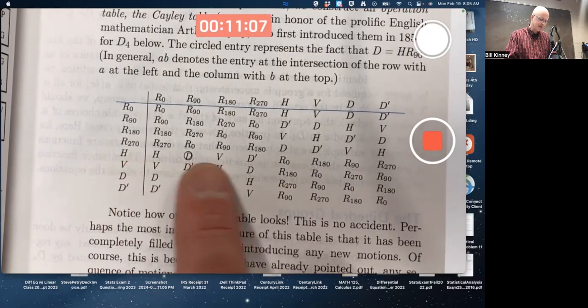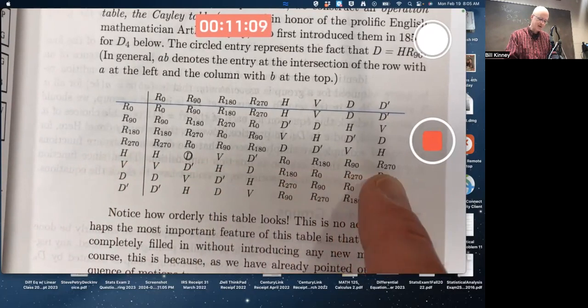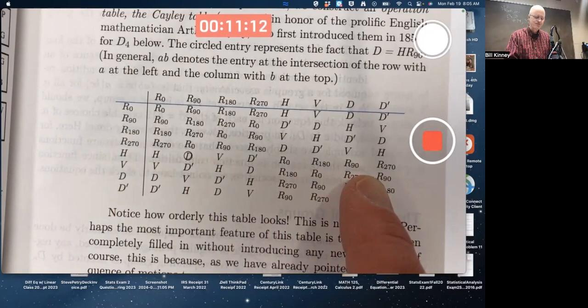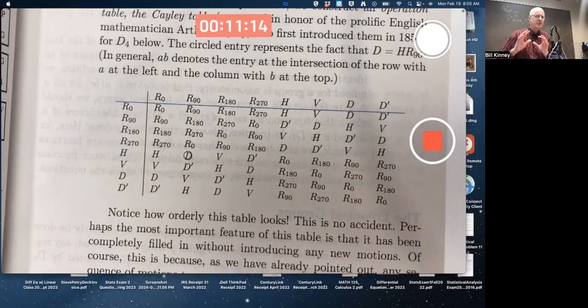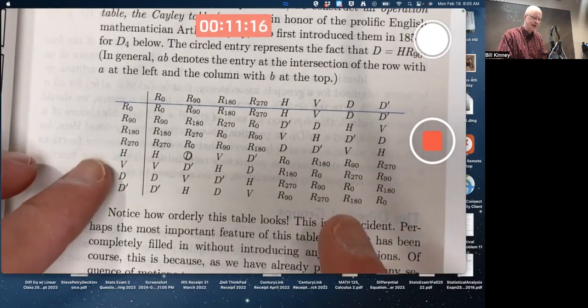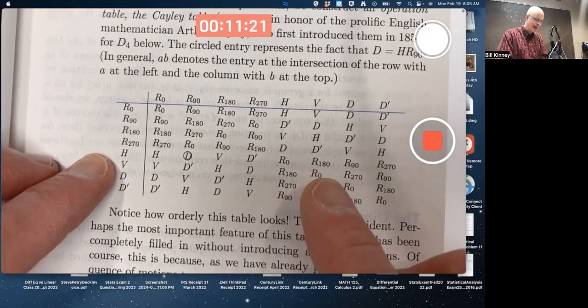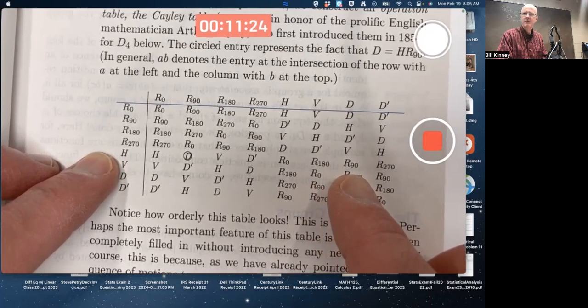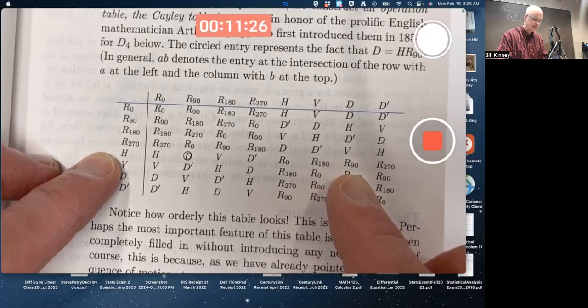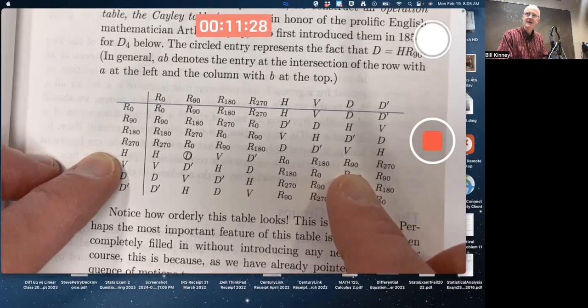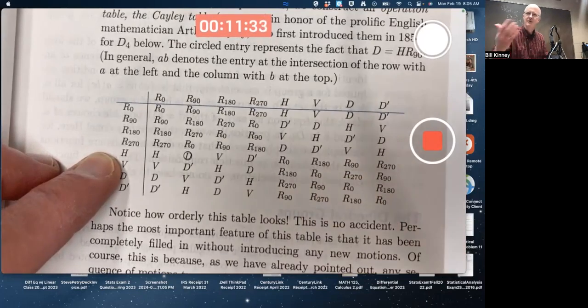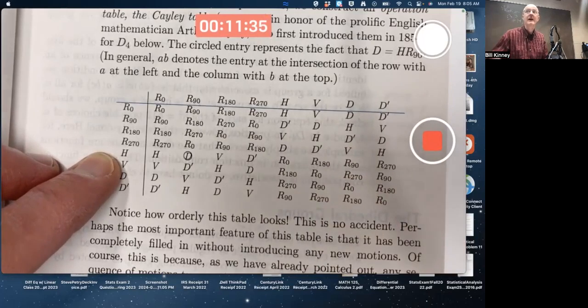But if you compose H with D or D' you get these other ones, R90 and R270, that have order 4. It should feel based on that, like if you started making and trying to make a subgroup of order 4, and you included H and D, for example, that that would be a problem. Because when you compose them, you get R90. And then when you want to make a subgroup out of that, you can do higher powers of that. You're going to get R180, R270 as well. It's going to be bigger than order 4. Doesn't that feel like a problem?